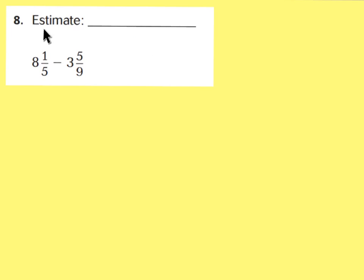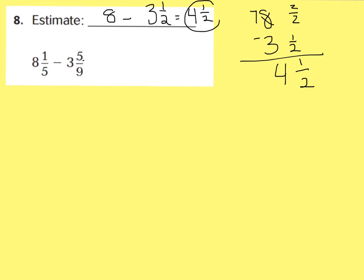Alright, for number 8, if we wanted to estimate first, I would say this is about 8 wholes minus 3 and 5 ninths. I know 9 is an odd number so you really can't find a half of it, but a half of 9 would be 4 and a half. So 5 is really close to that. So I'm going to say 8 minus 3 and a half. Now, remember when you subtract a fraction from nothing, you have to create something for it to subtract from. So I'm going to take this and make it 7 and make 2 halves. And now we can subtract. 2 halves minus 1 half is 1 half. And 7 minus 3 is 4. So our difference should be about 4 and 1 half.